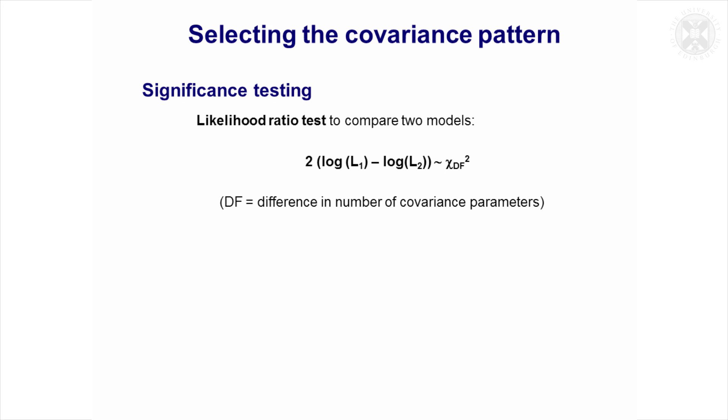So that's one way of building up and just making sure that any more complex covariance pattern is appropriate. If it's not significant you might reject it, and then you don't run the risk of overfitting and having a lot more parameters than the data really justify.